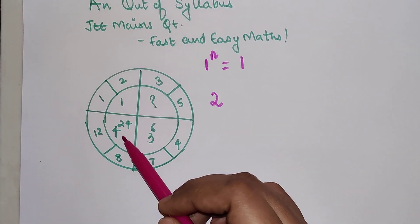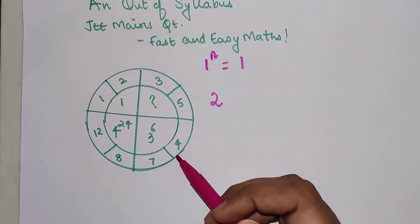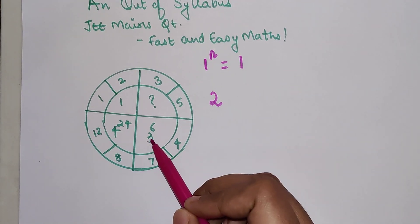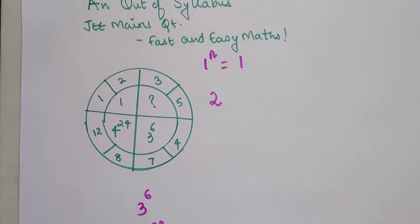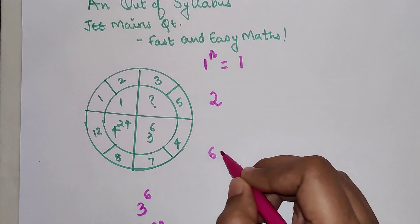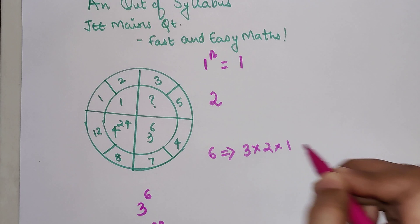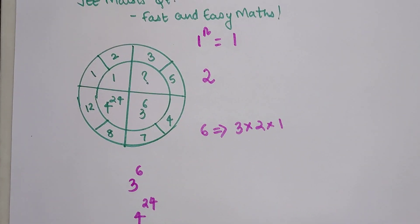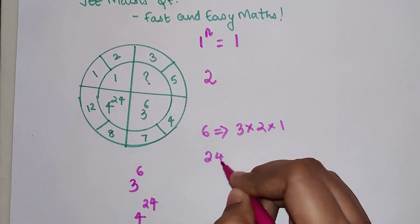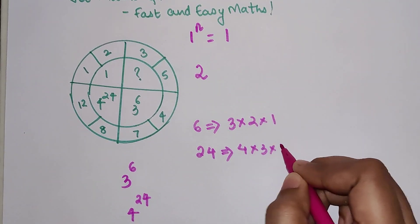Now please understand the power over here and here. From here you will get a hint. So basically if you do over here, 3 is raised to 6 and 4 is raised to 24. Now understand 6 can be written as what? 3 into 2 into 1, correct. And similarly, 24 can be written as 4 into 3 into 2 into 1.